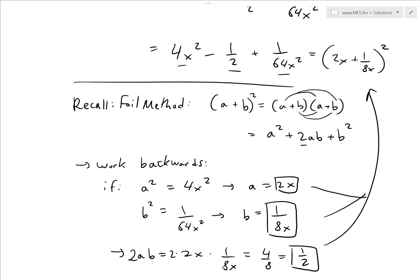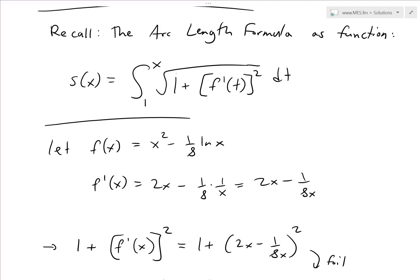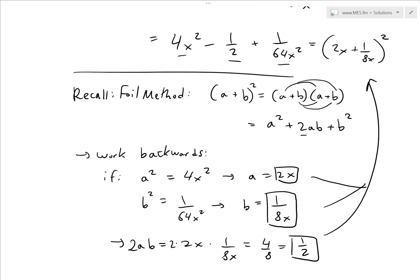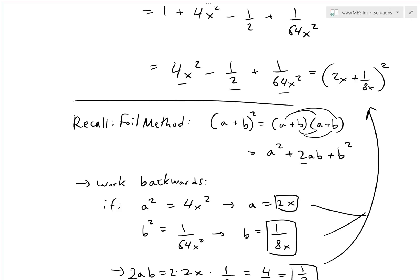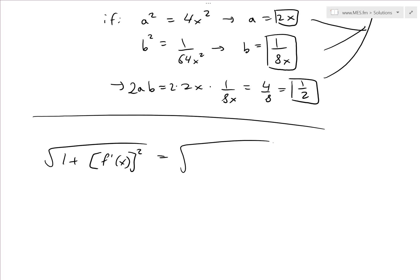Taking the square root: the square root of 1 plus f prime of x squared equals the square root of (2x plus 1 over 8x) squared. The square root and square cancel, giving us simply 2x plus 1 over 8x.